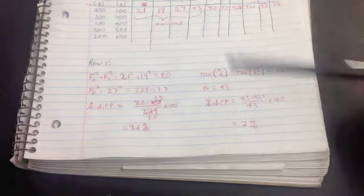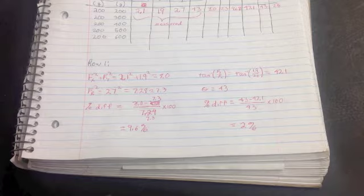So row one is the only one I have to show the numbers for. If you want to write them down for the other rows, that's fine, but if you want to just punch them in your calculator.